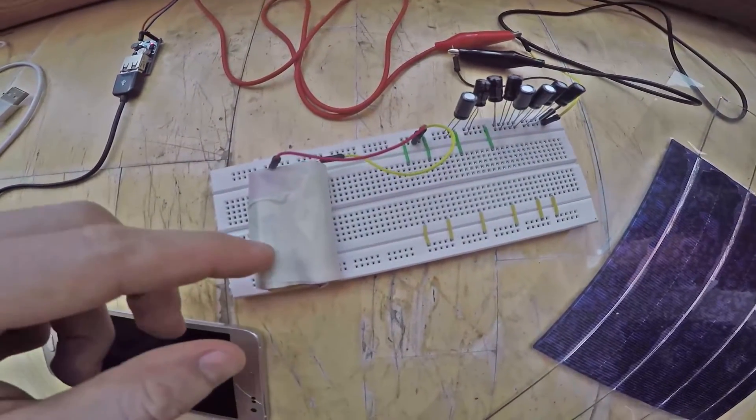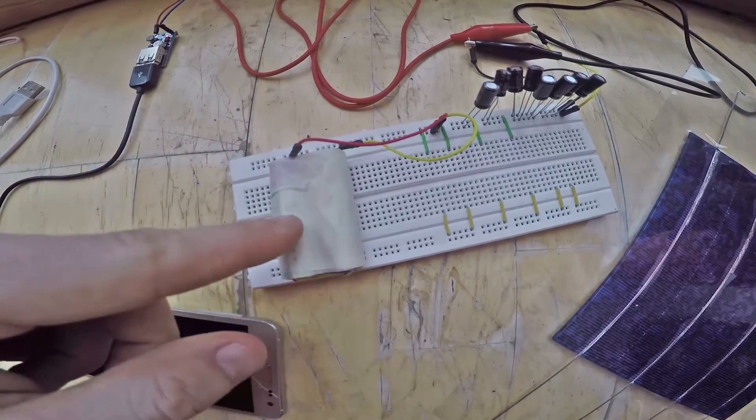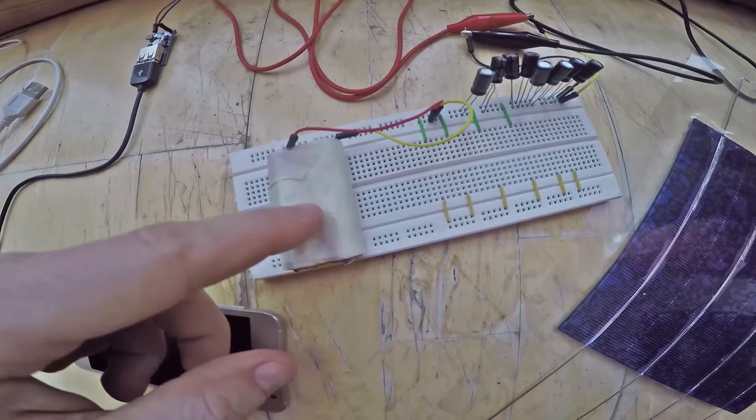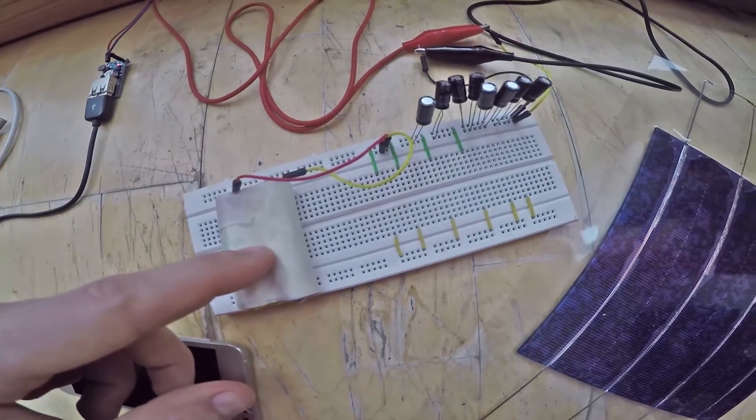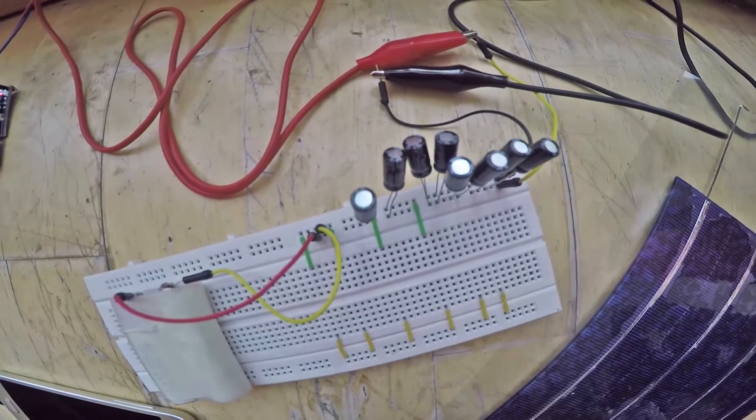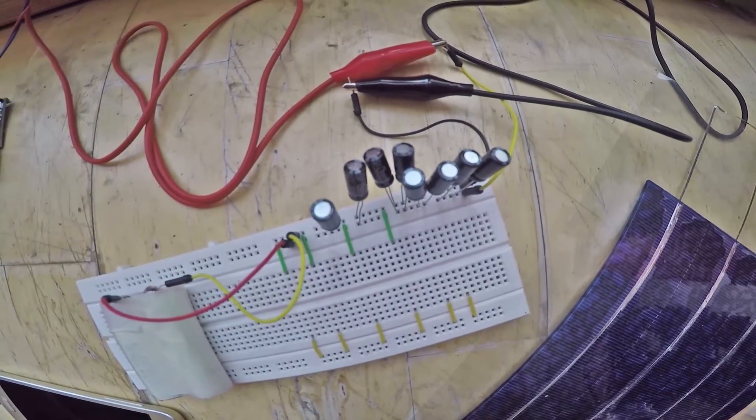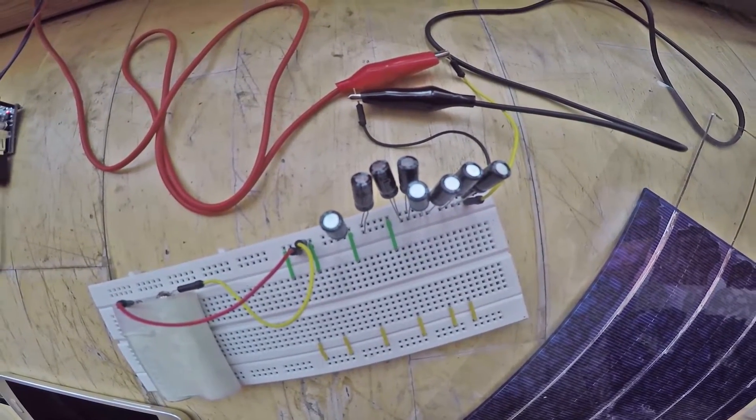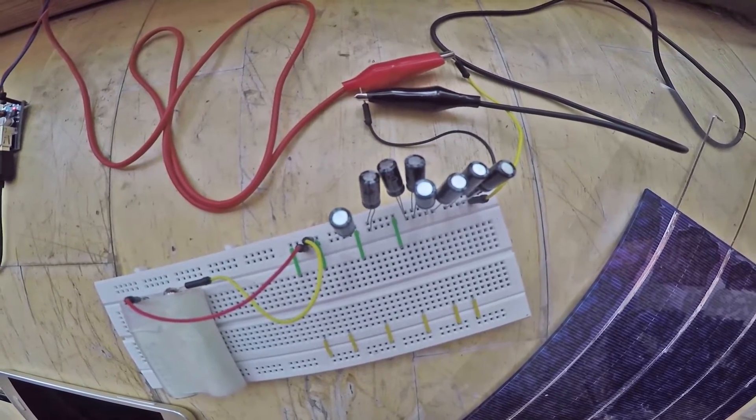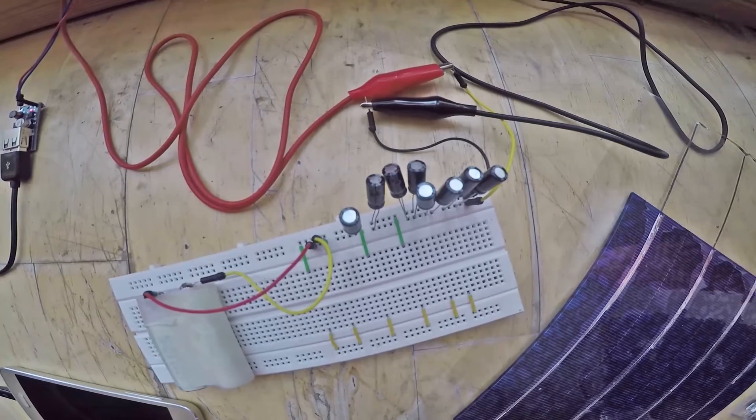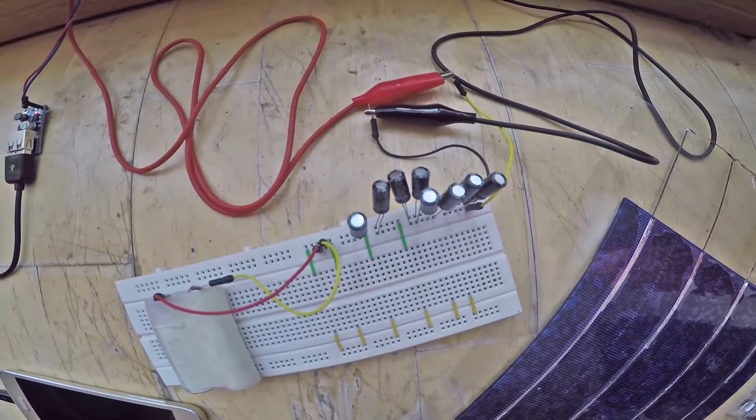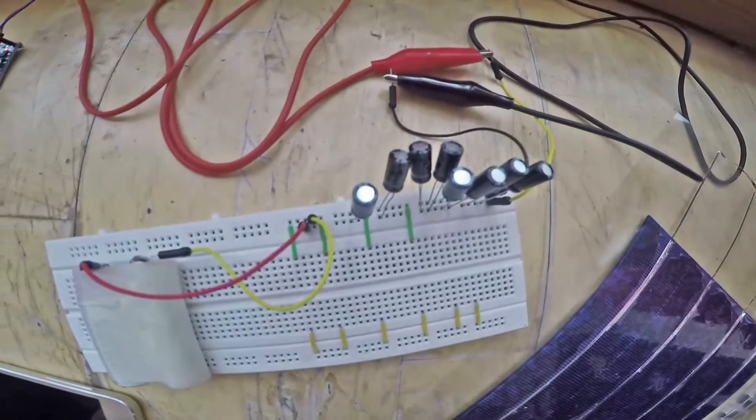The breadboard has two lithium 1.2 volt rechargeable batteries—you can buy these at any store. Right here we have dozens of capacitors. What is a capacitor? A capacitor is basically where you can store tiny amounts of energy.